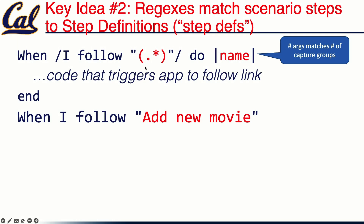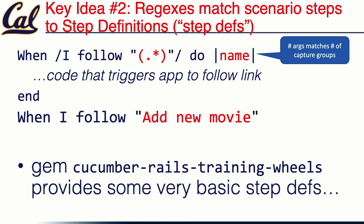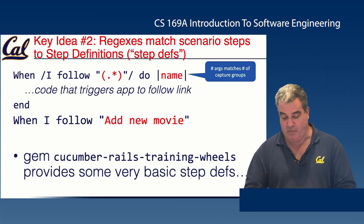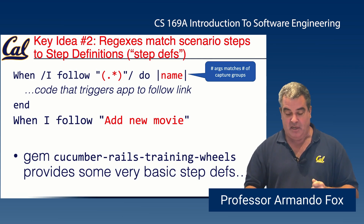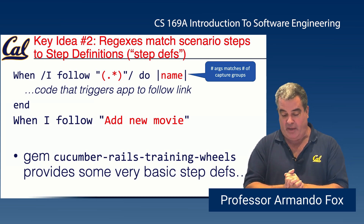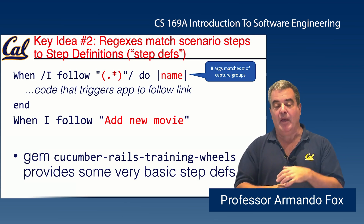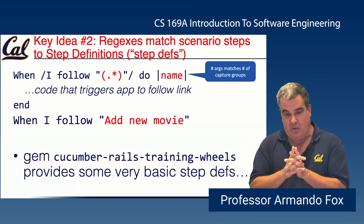For each line in your scenario, Cucumber tries to find a step definition whose regular expression matches that line. It is an error for multiple step definitions to match — Cucumber will tell you to make them more specific. There is also an additional gem called cucumber-rails training wheels that provides common built-in step definitions. For example, 'when I follow' is a built-in step definition that looks for a link with that text and clicks it. There are also things like 'when I drop down this menu and select something' or 'when I submit this form.'